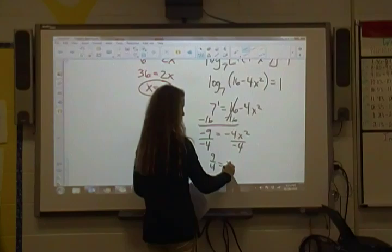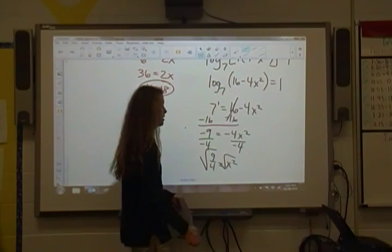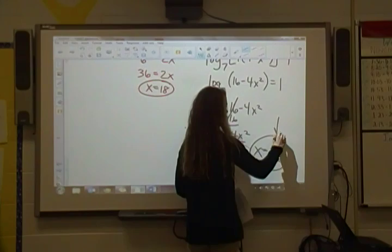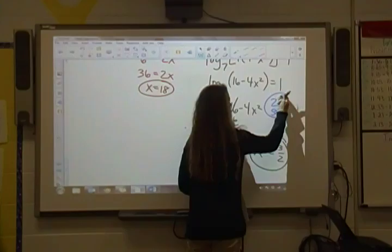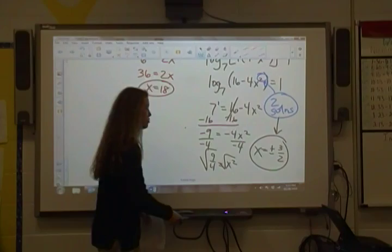When you take the square root of something, that means that you're going to have two answers, plus or minus. So finally, I'll have plus or minus 3 halves. So please notice that you have two solutions because you started with an x squared. The fundamental theorem of algebra says that if we have a degree of two, we're going to have two solutions.